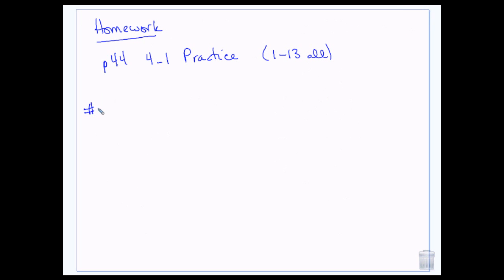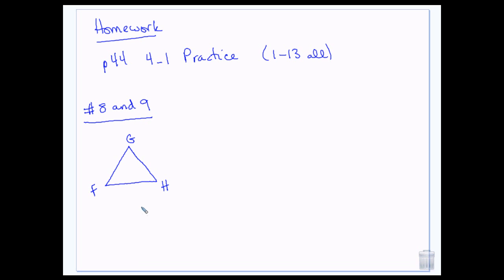If you look at numbers 8 and 9 on the homework, they give you an equilateral triangle FGH and then give you the lengths of the sides. You need to actually draw and label the triangle — it doesn't matter which point is which letter. Then FG is x plus 5, GH is 3x minus 9, and FH is 2x minus 2. Number 9 is kind of the same thing except you have an isosceles, so only two of the sides are equal.